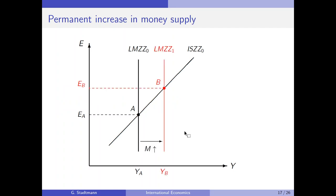Let's perform this step. The LMZZ curve shifts to the right. We look for the new intersection of the shifted LMZZ curve with the old IS-ZZ curve. An increase in money supply is able to cure the problem of the economy: at point A there was very high unemployment, and the central bank is able to increase GDP and solve the recession.